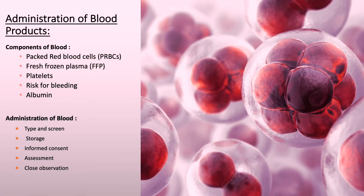Mannitol reduces cerebral edema and eliminates toxins from the body. Blood and blood products consist of five components: packed red blood cells, given for anemia or chronic blood loss to raise oxygen and red blood cell levels; fresh frozen plasma (FFP), given for clotting factor deficiency, to reverse elevated prothrombin time and INR, or for DIC (disseminated intravascular coagulation); and platelets, given for bleeding or thrombocytopenia.